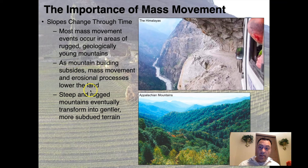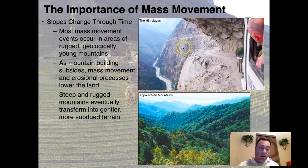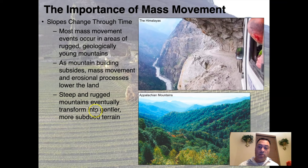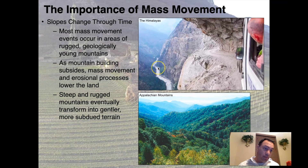As mountain building subsides and slows down, mass movement and erosional processes lower the land. So the Himalayas will eventually turn into mountains more like the Appalachians — both are collisional mountain events, and over 500 million years the Himalayas will erode down and look like the Appalachians. Notice the slopes are much gentler in the Appalachians. Steep, rugged mountains gradually transform into gentler, more subdued terrain — it's the landslides that make this happen.